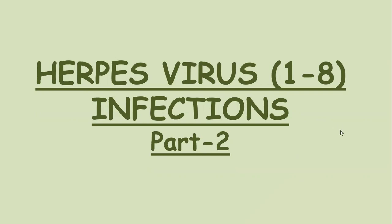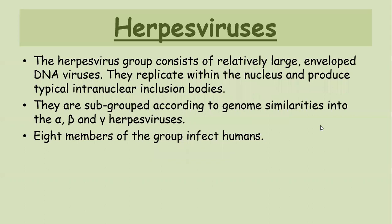The most important ones are definitely herpes virus 1, 2 and 3. The herpes virus group consists of relatively large enveloped DNA viruses. They replicate within the nucleus and produce typical intranuclear inclusion bodies. They are subgrouped according to genome similarities into alpha, beta and gamma herpes virus. Eight members of the group infect humans.